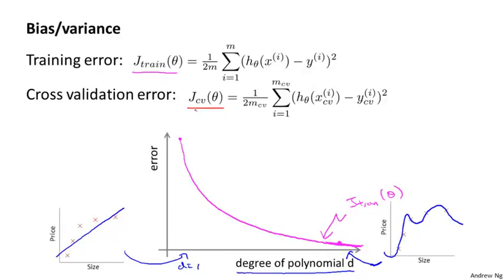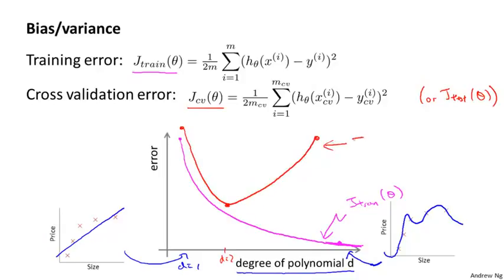Next, let's look at the cross validation error — and the test set error gives a pretty similar result. If d equals one, we're fitting a very simple function and may be underfitting, so we'll have a very high cross validation error. If we fit an intermediate degree polynomial — d equals two in our earlier example — we get a much lower cross validation error, a much better fit to the data. Conversely, if d is too high, say four, we're overfitting and end up with a high cross validation error again. If you vary this smoothly and plot a curve, you get a U-shaped curve for J_cv of theta, and J_test of theta gives something very similar. This plot helps us better understand the notions of bias and variance.